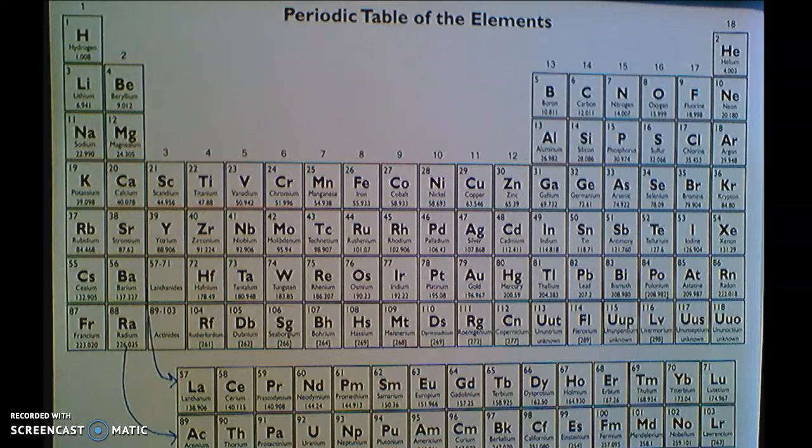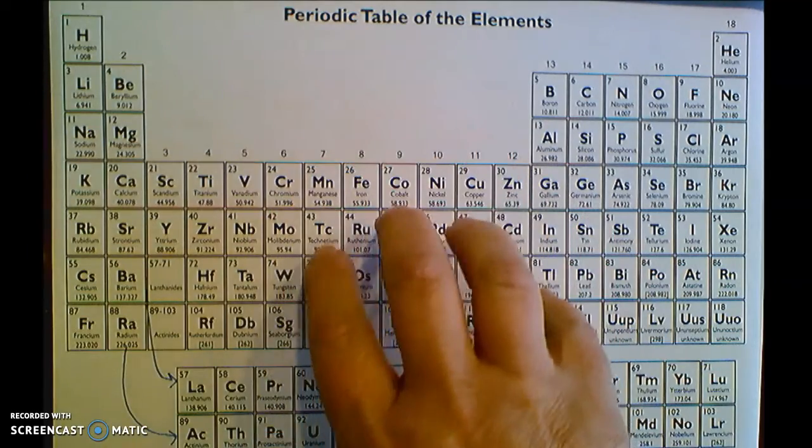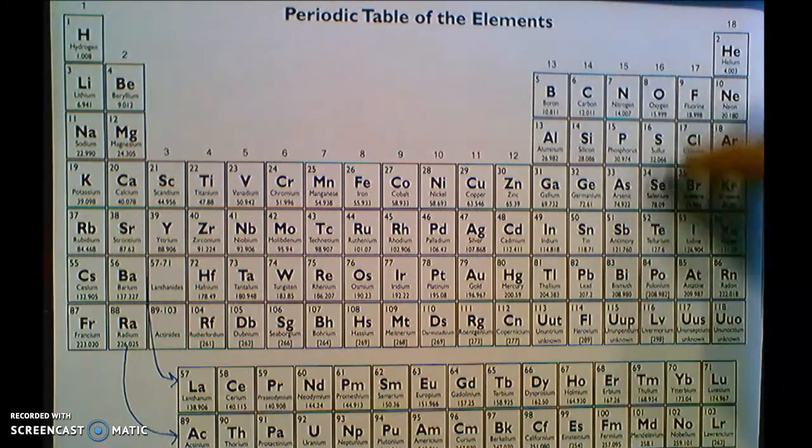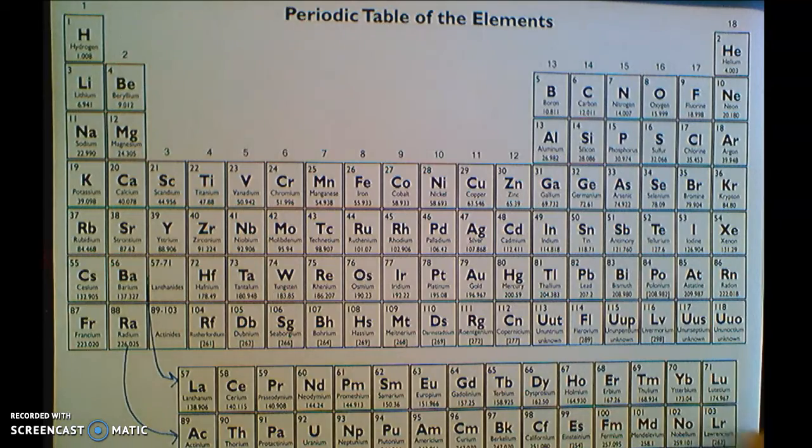So there's one more thing I wanted to talk to you about when we look at the Bohr model, and that's how it fits in with the periodic table. I showed you in the last video how the number of electrons at each level corresponds to the number of elements in each row, at least when the number of elements changes in that row. But there's something else that happens that I wanted to show you here.